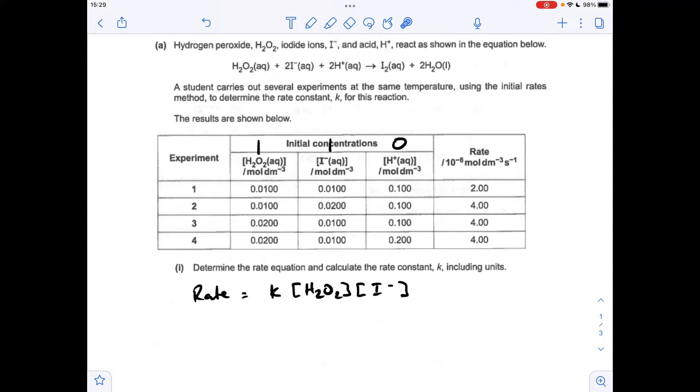The rate equation is rate equals k, hydrogen peroxide concentration multiplied by I-minus concentration. You can put power 1 there if you want, but I don't intend to. Rearranging for k, we get the rate over the two concentrations multiplied together. I'm going to sub in the values for experiment 1.